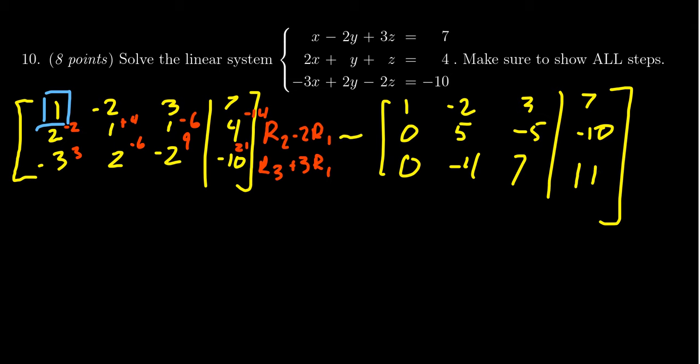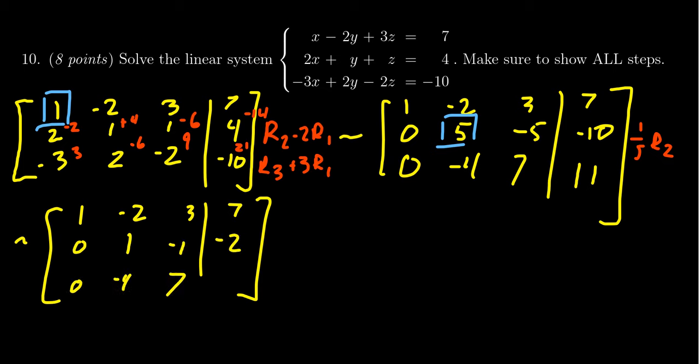So the next thing I want to do, moving my pivot position to the 2,2 spot, I recognize that the second row, everything is divisible by 5. So I'm going to divide everything by 5 in row 2. This gives me the matrix where the first row stays the same. In the second row, everything divided by 5, you get 0, 1, -1, and -2. This gives you 0, -4, 7, and 11.